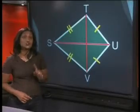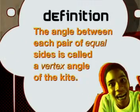Now we need to discuss a new term. The angle between each pair of equal sides is called a vertex angle of the kite.